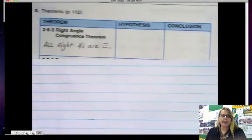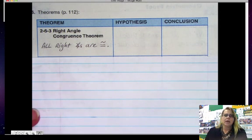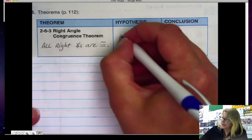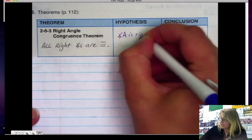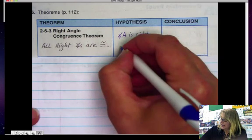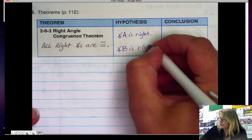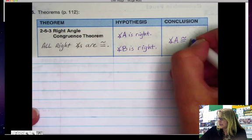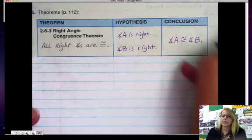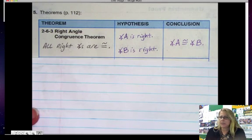The Right Angle Congruence Theorem says that all right angles are congruent. So if I were telling you that angle A is right and angle B is a right angle, our conclusion would be angle A is congruent to angle B because they all equal 90 degrees. So that means that they have to be congruent to each other.